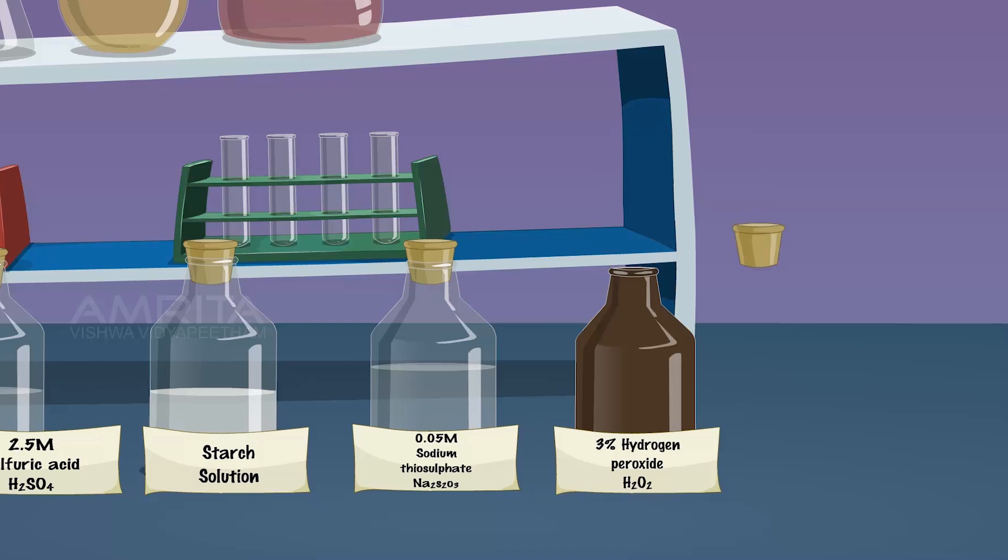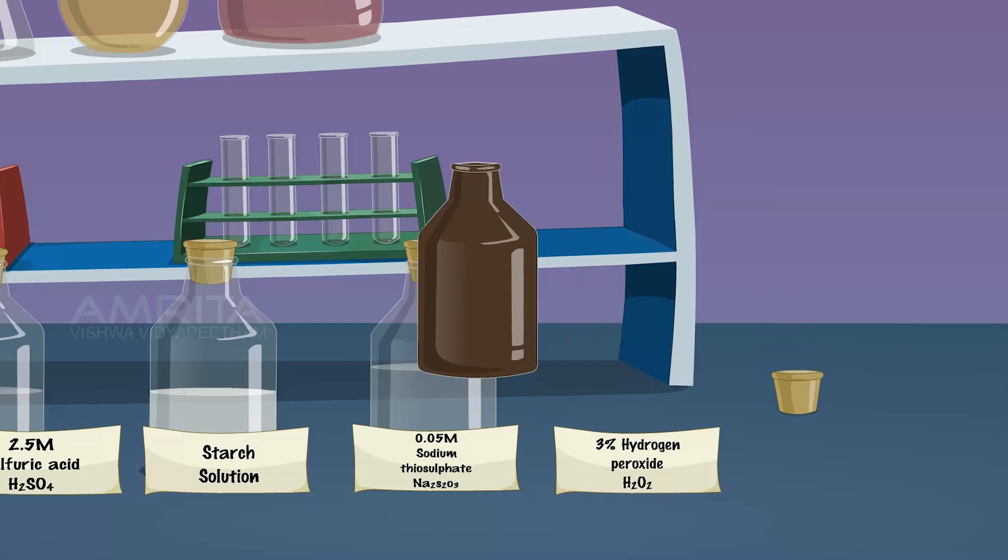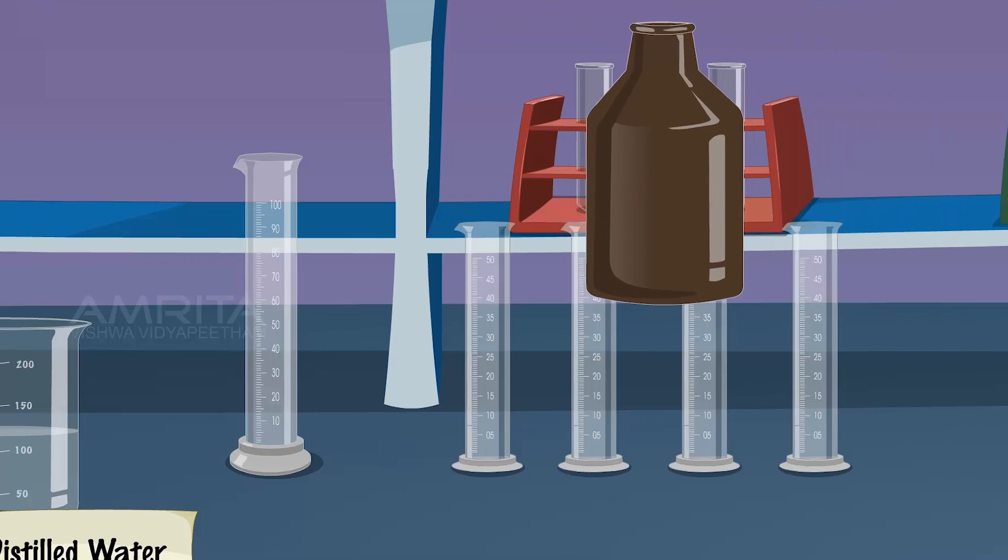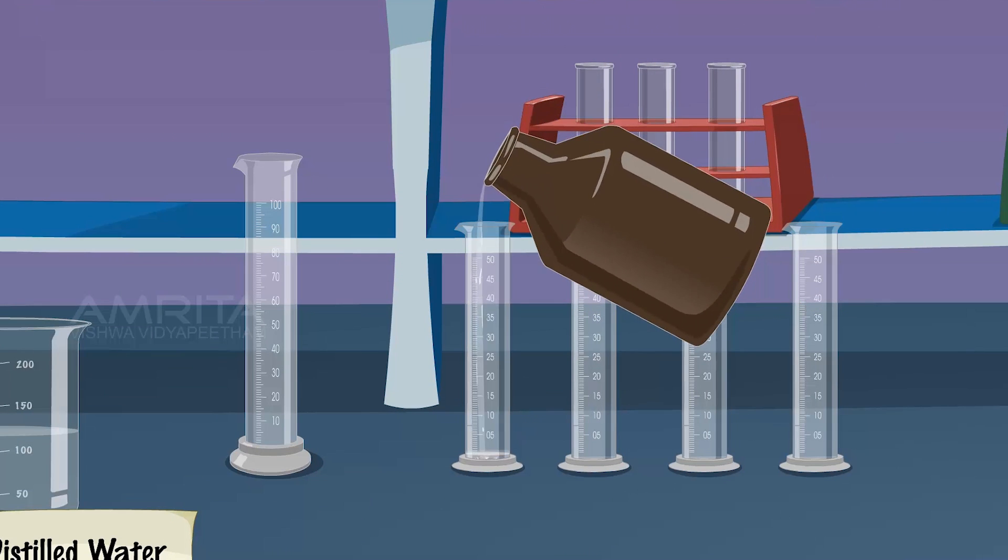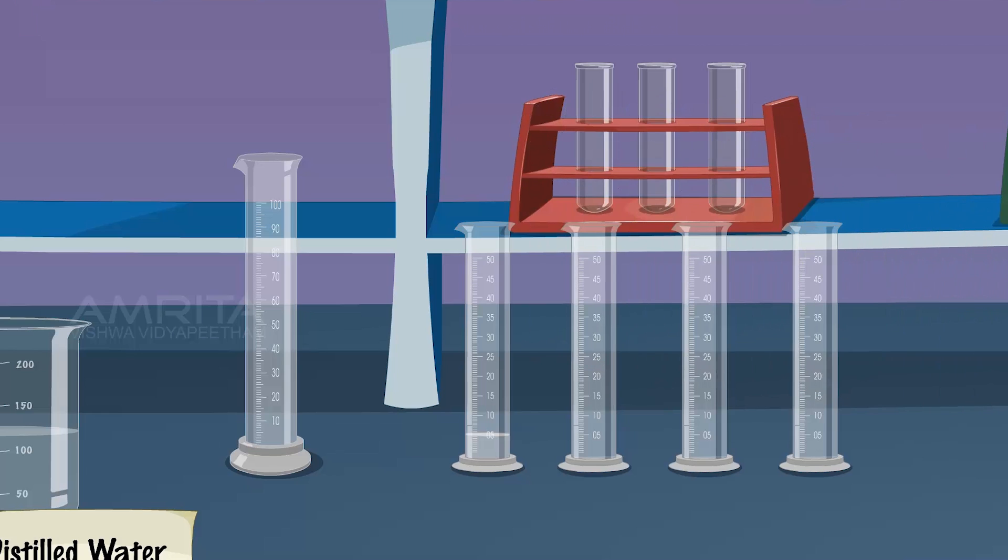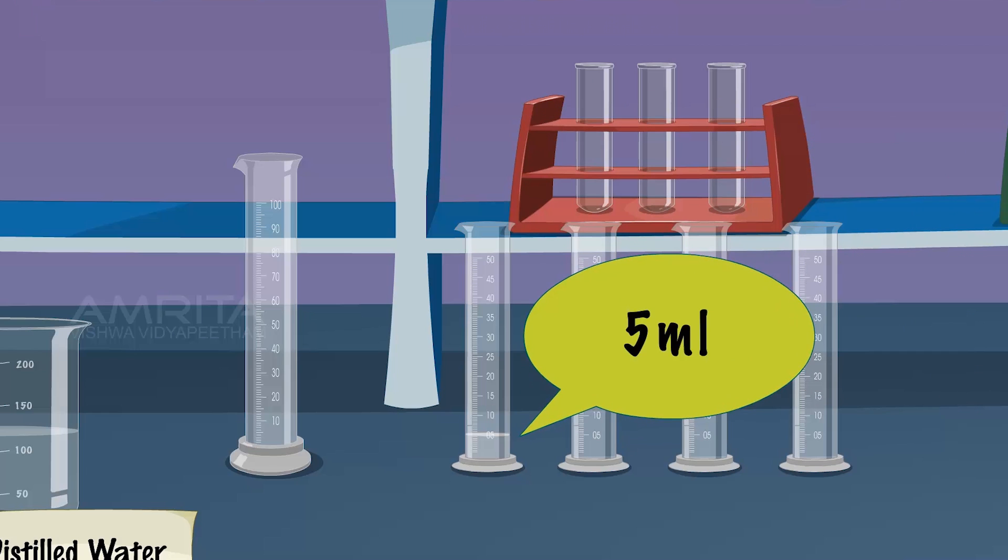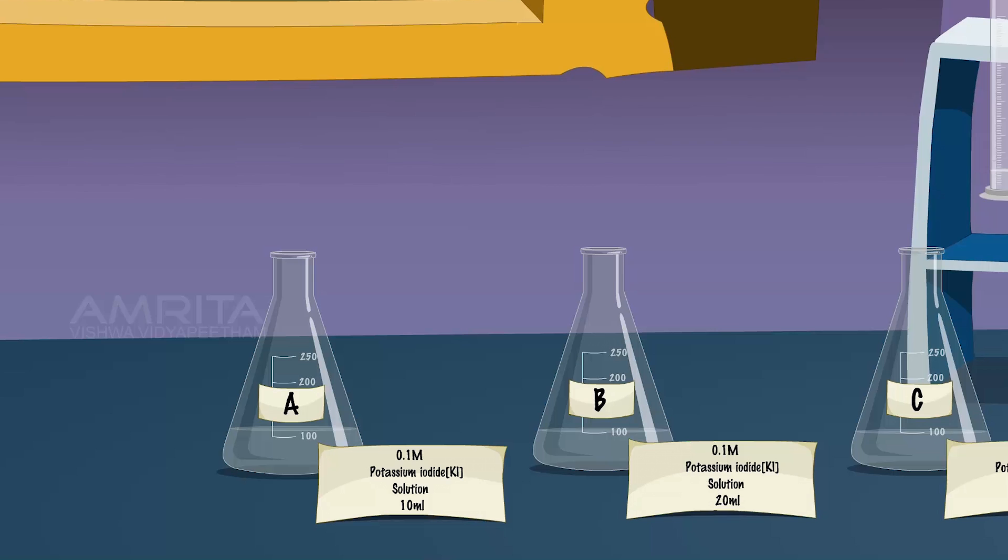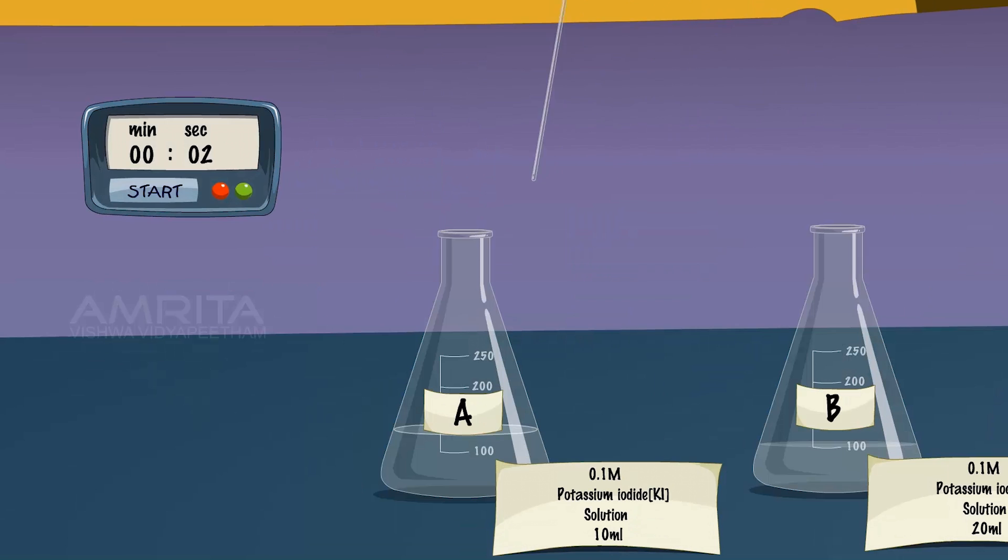Then take 5 ml of 3% hydrogen peroxide solution. Pour it into flask A and start the stopwatch immediately. Stir the mixture using a glass rod and watch for the blue colour to appear. Note the time when the blue colour just appears.